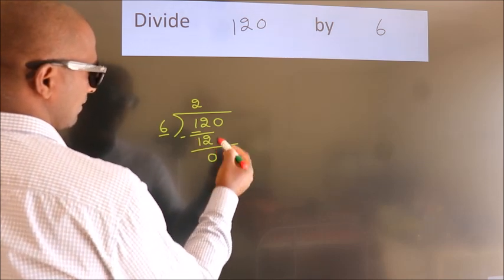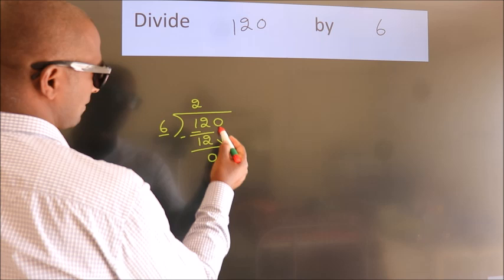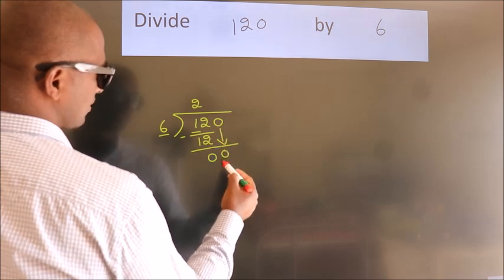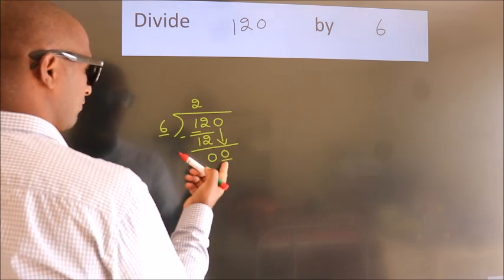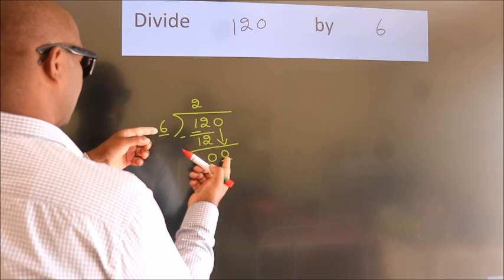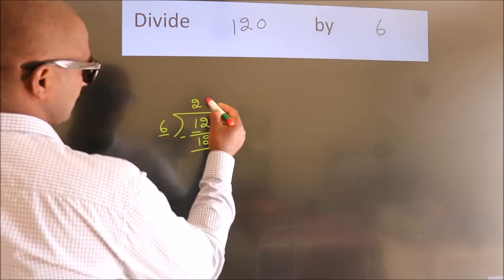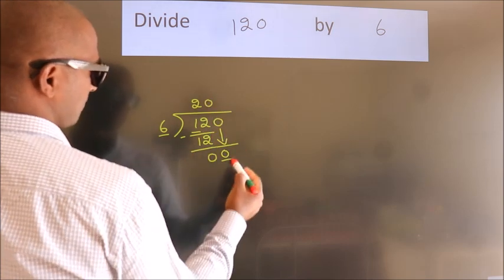After this, bring down the beside number. So 0 down, so 0. When do we get 0? In 6 table, 6 times 0, 0.